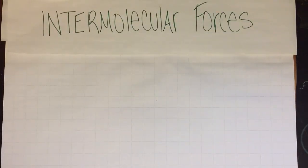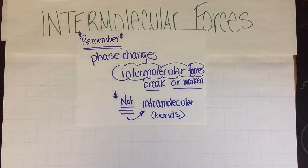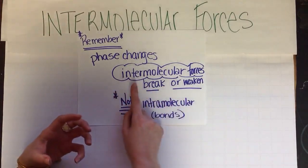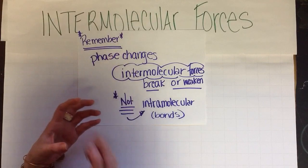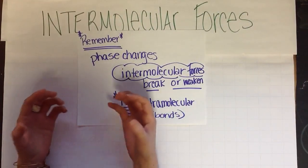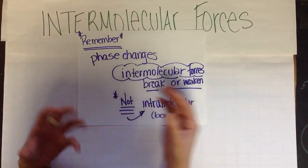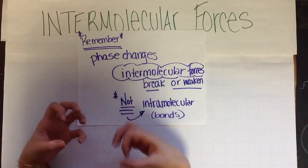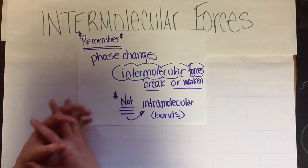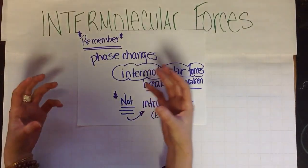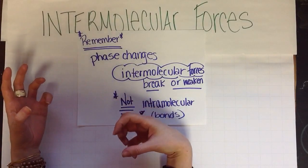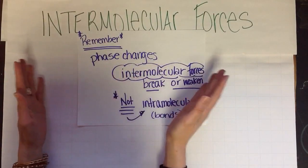If you remember from our previous videos, when a liquid turns into a gas, those intermolecular forces break, and now a water molecule is free to go off as gas. And when a solid melts into a liquid, those intermolecular forces weaken and allow it to become more of a fluid, liquid-like substance. Remember, the misconception is that students sometimes think the atoms break apart in phase changes — that is not true.